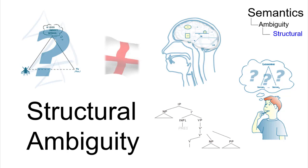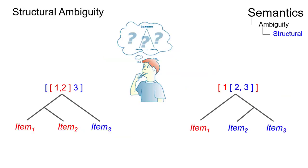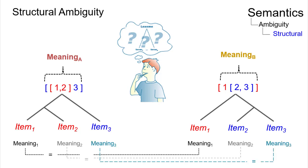Structural ambiguity occurs when constituents can relate to each other in different ways, resulting in different meanings, even though none of the individual items may be ambiguous.